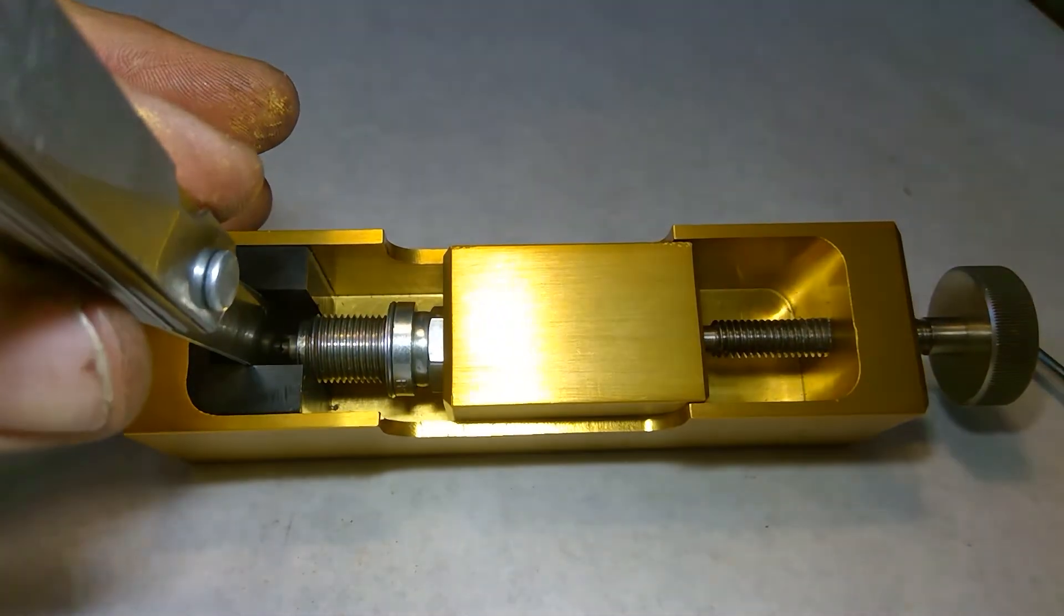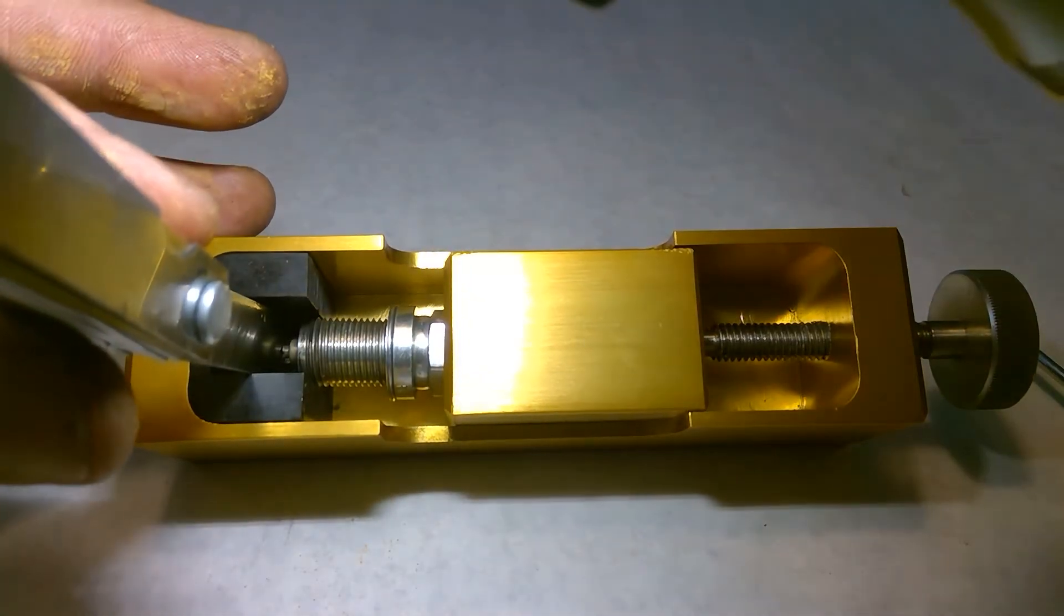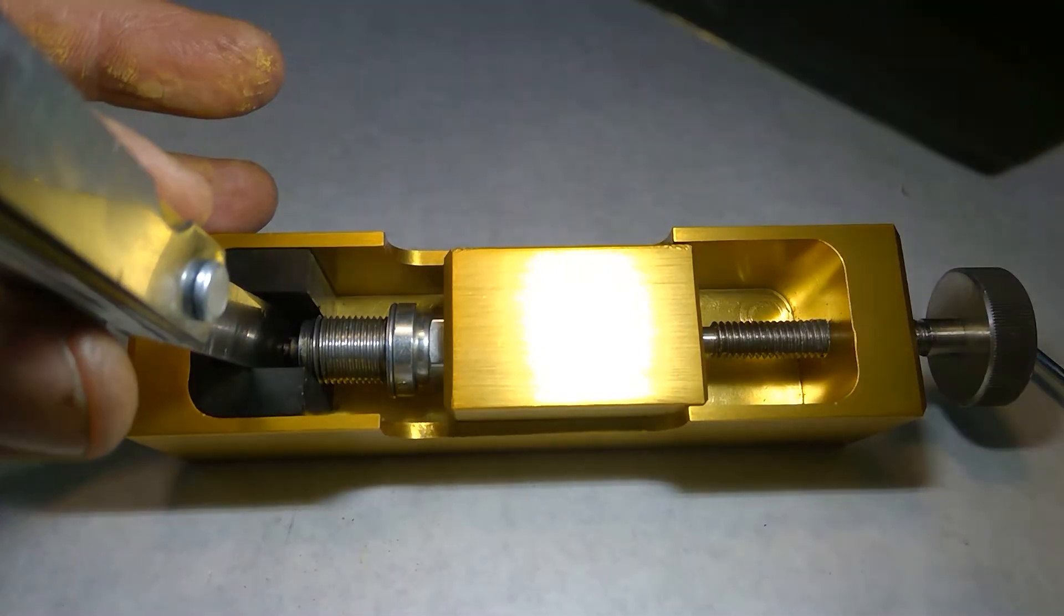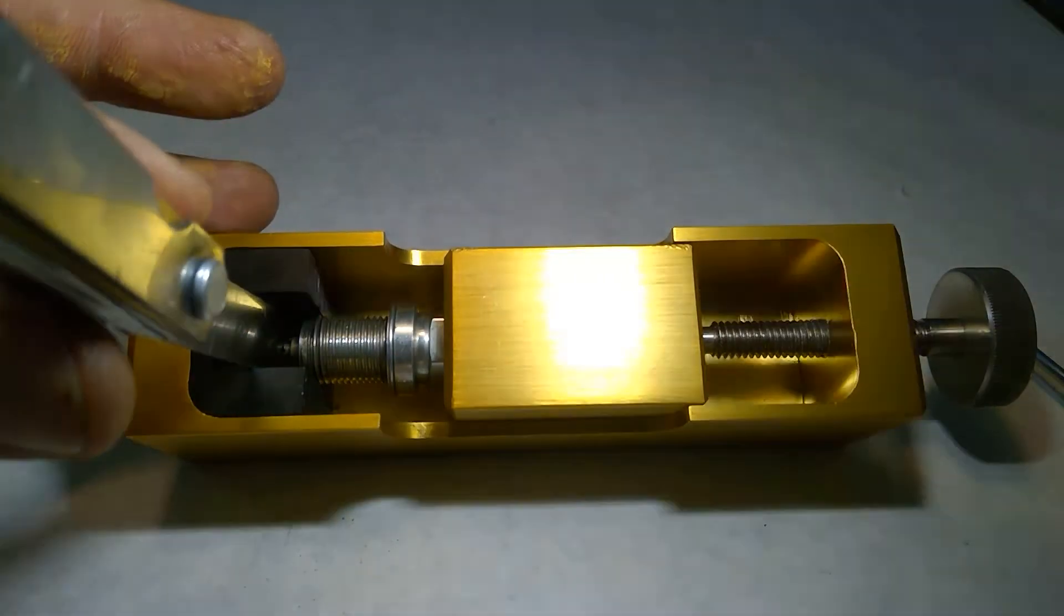Now, I know this is hard to see, but what I've got is the ground electrode against this stop, the feeler gauges in the gap, and the body in this adjusting block.